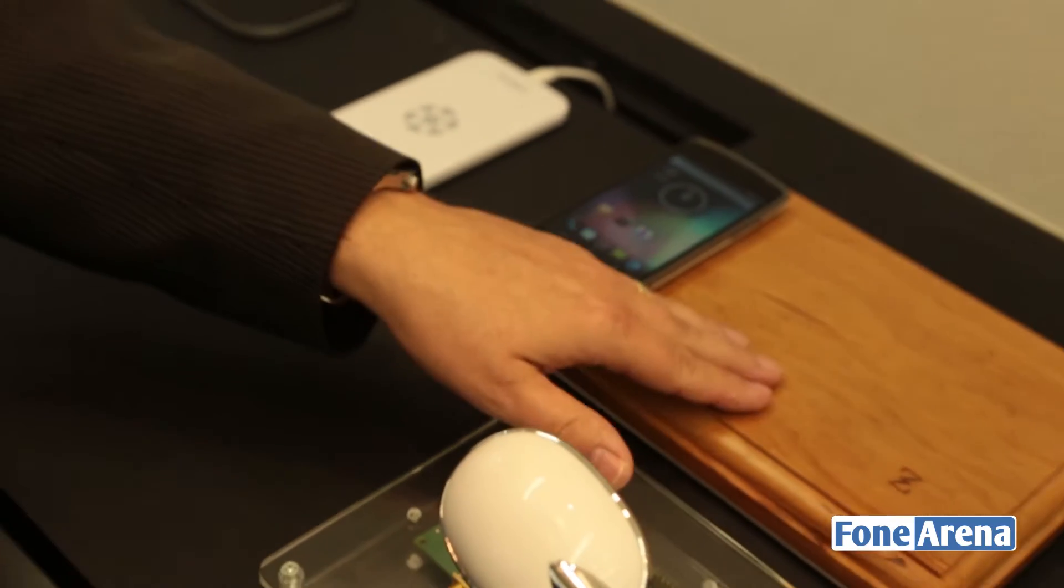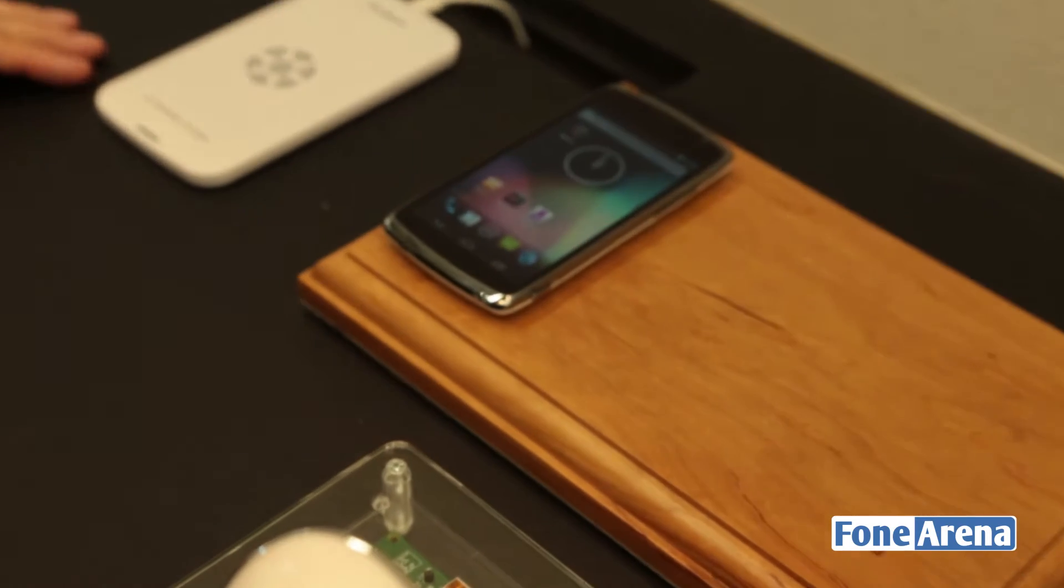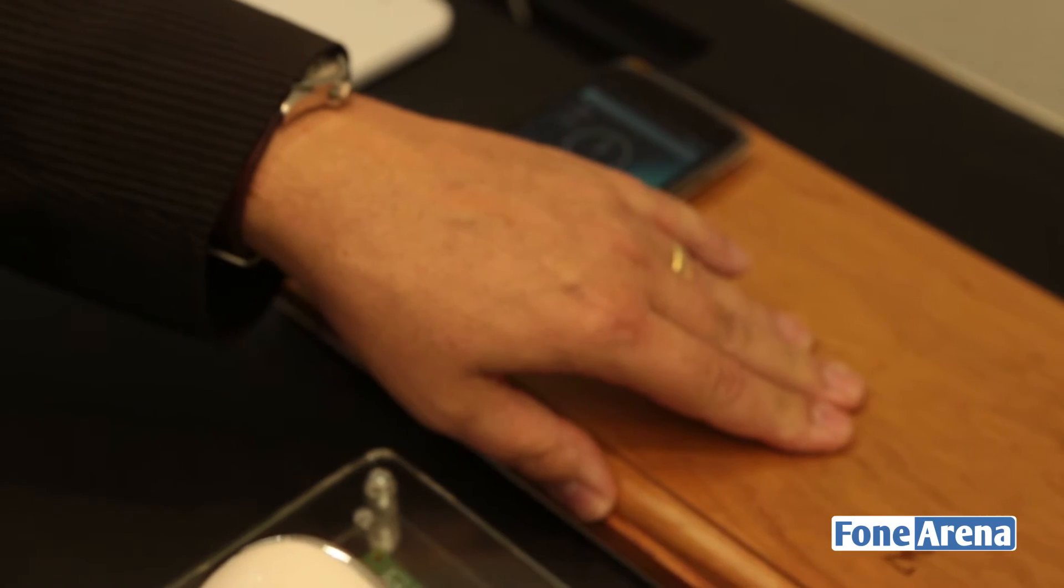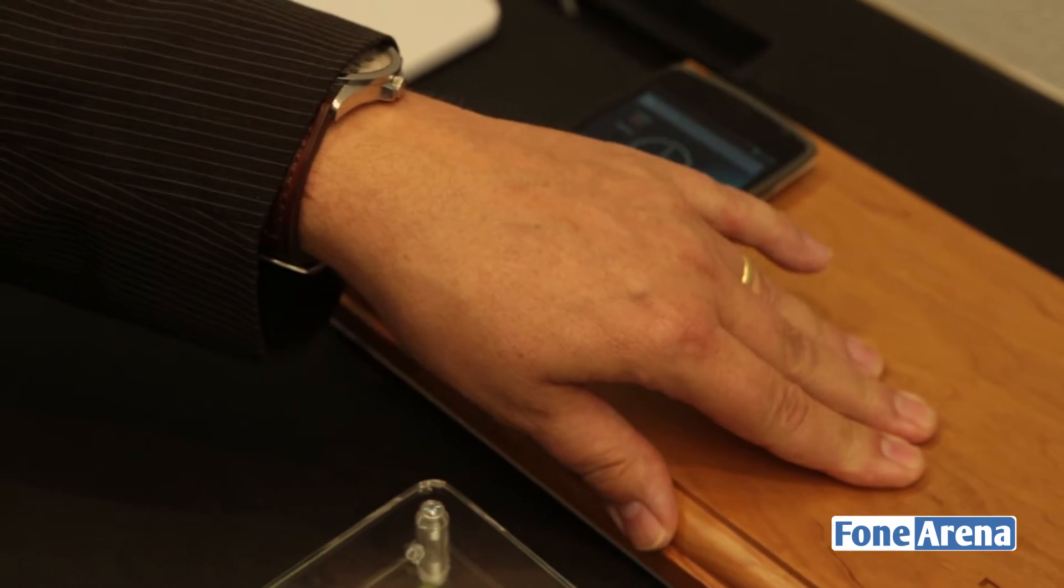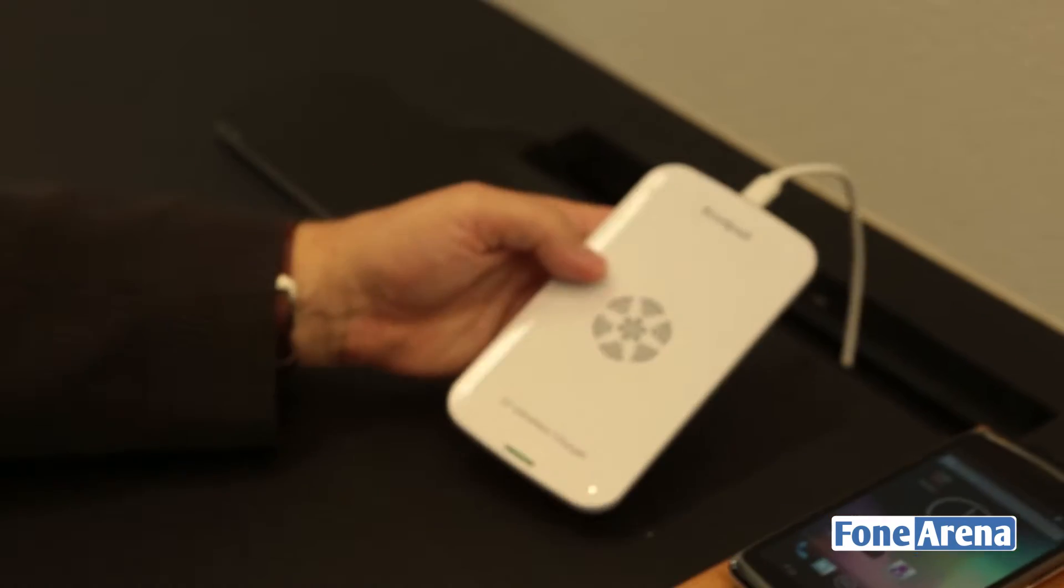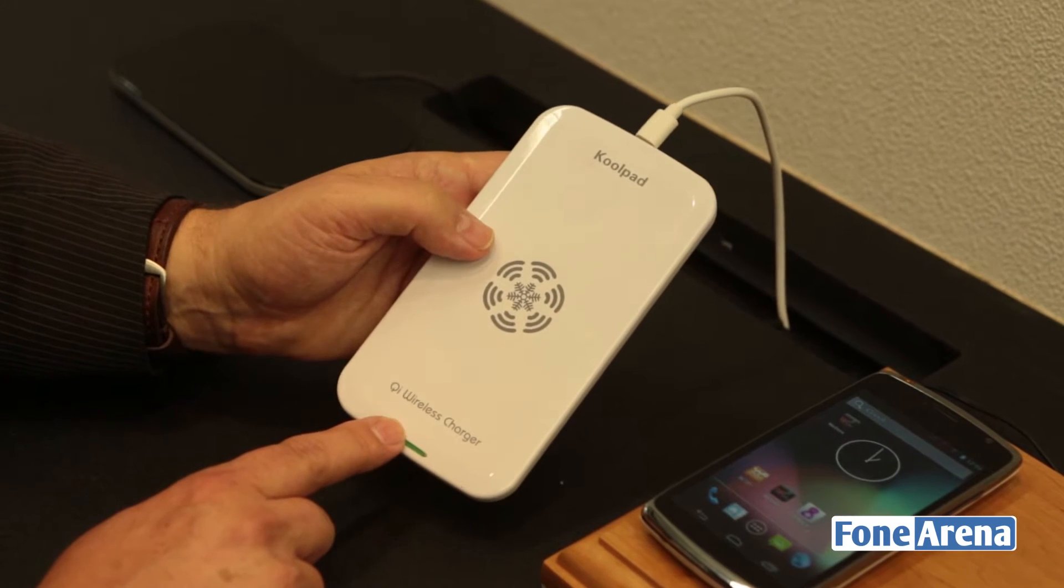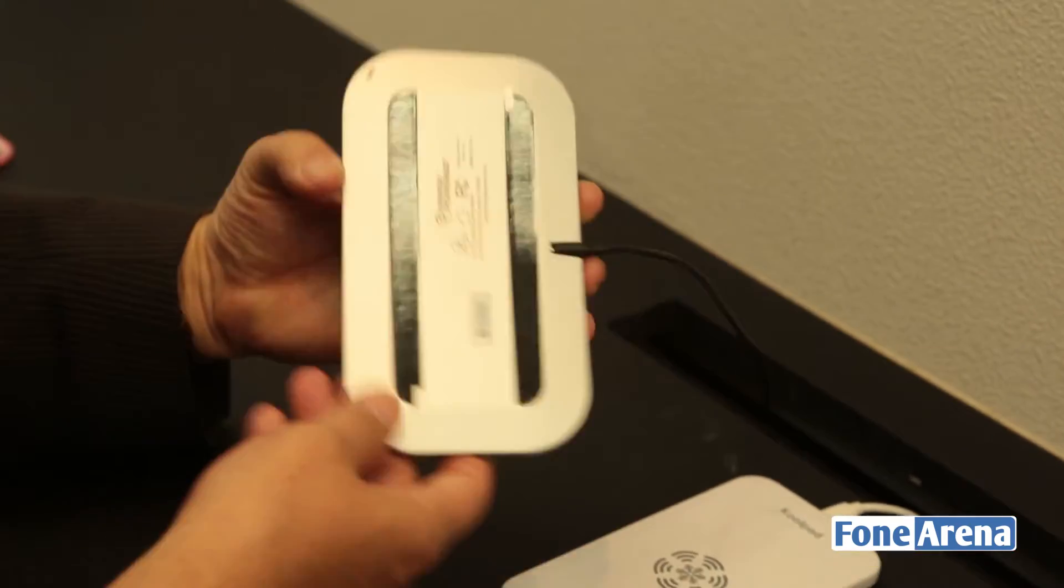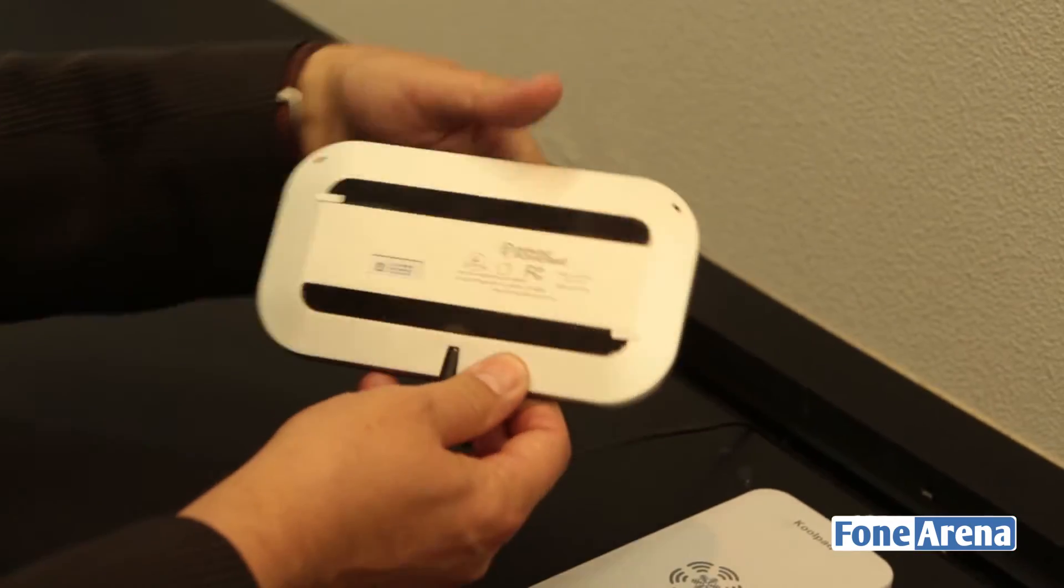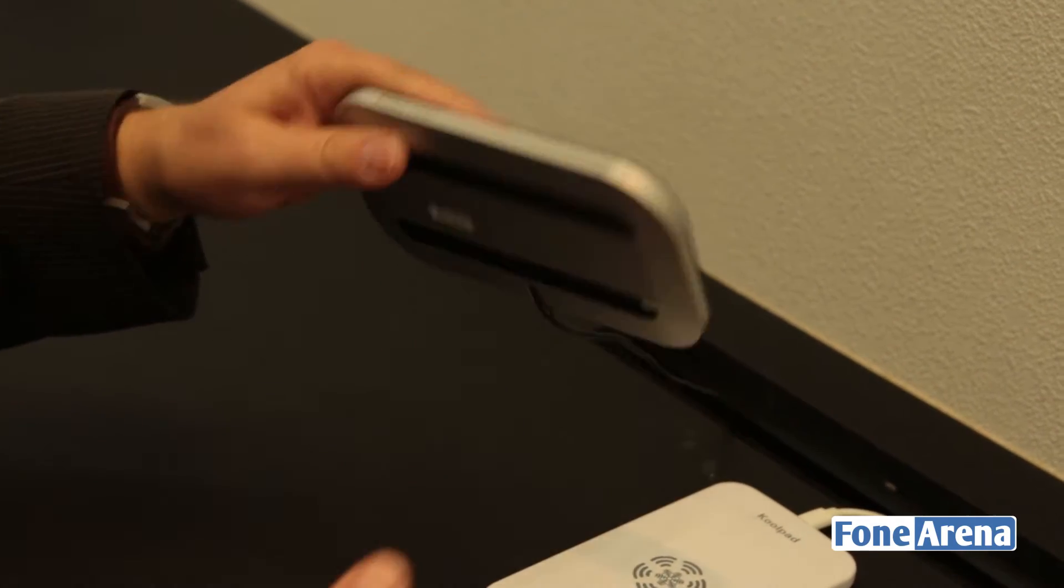So what we're having here is three examples of the standards that are available. This is a charging pad for A4WP, which is the resonance band standard. This is a charging pad that is working according to the Qi or WPC wireless charging standard. And here we have a power mat charging pad which is working according to the PMA standard.